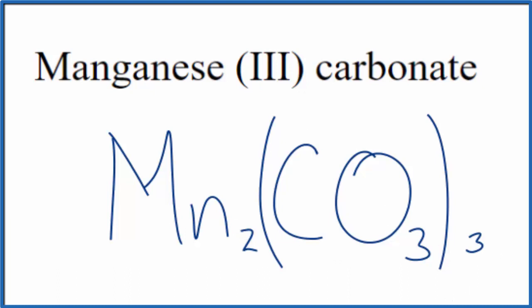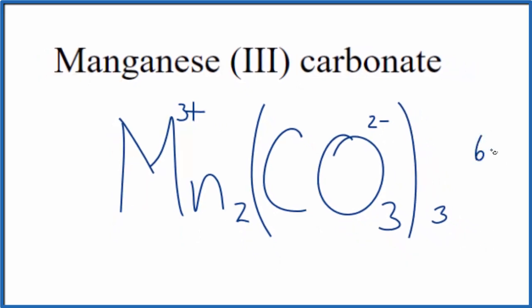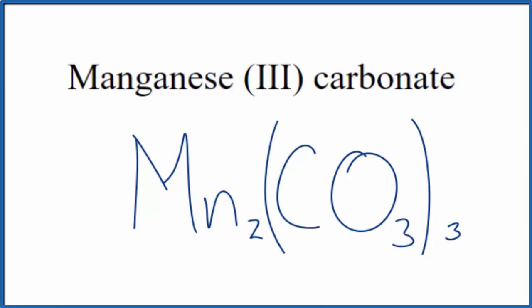Let's check our work, though, just to make sure. We said the manganese, each one is 3 plus, and the whole carbonate ion, 2 minus. 3 times 2 minus, that's 6 minus. 2 times 3 plus is 6 plus. So 6 plus, 6 minus, that adds up to 0. Net charge of 0. So this is the formula for manganese 3 carbonate.